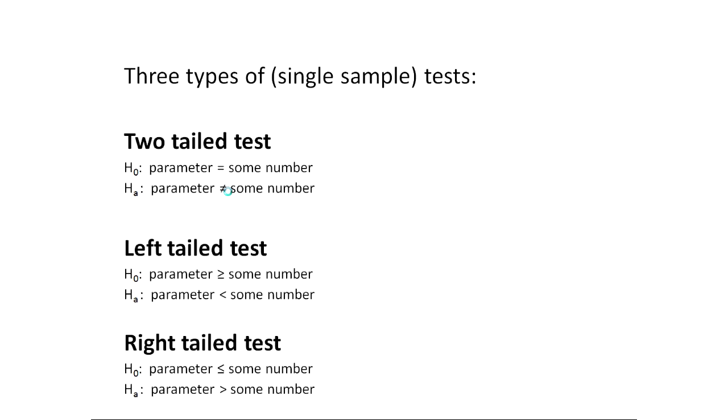When you're deciding if you have a two-tailed test, a left-tailed test, or a right-tailed test, what you should be looking at is HA. When I say two-tailed test, for instance, what I'm talking about is a not equals on HA. Two-tailed is not equals because the p-value will actually come from two different tails of our distribution.